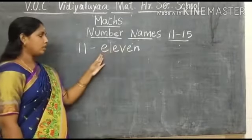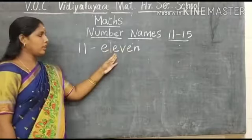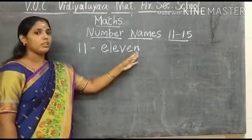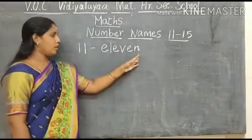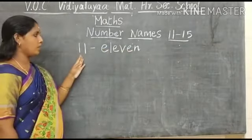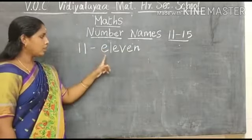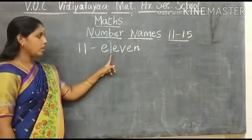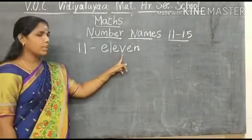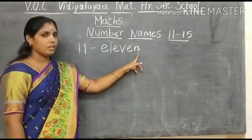E, L, E, V, E, N. 11. What number is this? This is number 11. What is the spelling of number 11? E, L, E, V, E, N. 11.